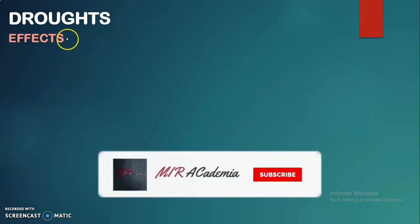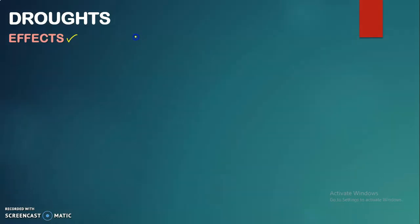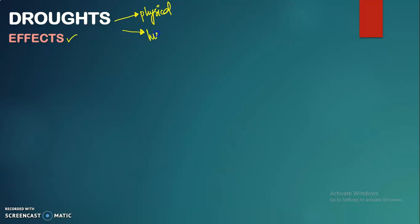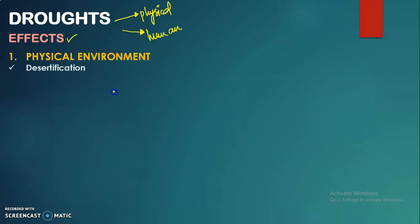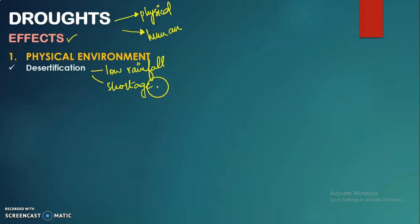Now let's discuss the effects of droughts. There are two kinds: effects on the physical environment and effects on the human environment. The first effect on the physical environment is desertification. Drought involves a prolonged period of low or no rainfall, or a shortage of water — both conditions lead to desertification, as the land area becomes a desert.